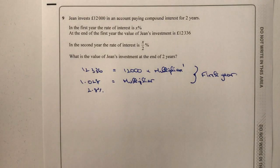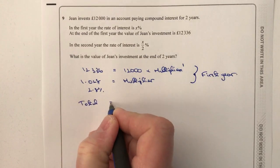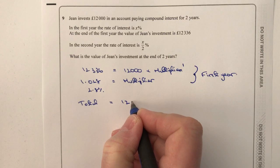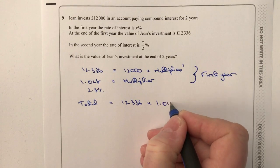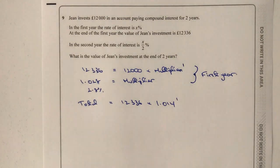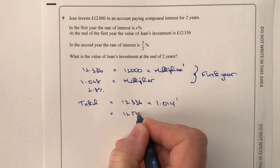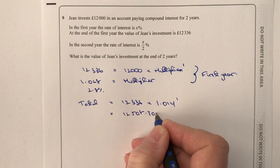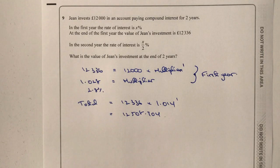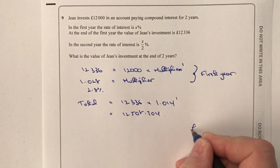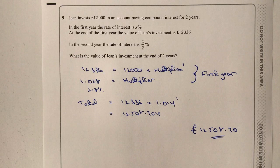We take the value of £12,336 as the new starting amount and use a multiplier of 1.014 to the power of one. Plugging that into a calculator gives a total of £12,508.704, which to the nearest penny is £12,508 and 70p. If you're not sure about that please do have a look at the compound interest playlist.